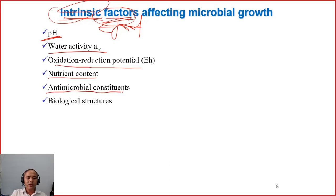the antimicrobial constituents, means the components which have antimicrobial properties in the food. Many foods have some components like that, and then they may inhibit microorganisms as well. And the last factor is the biological structures.